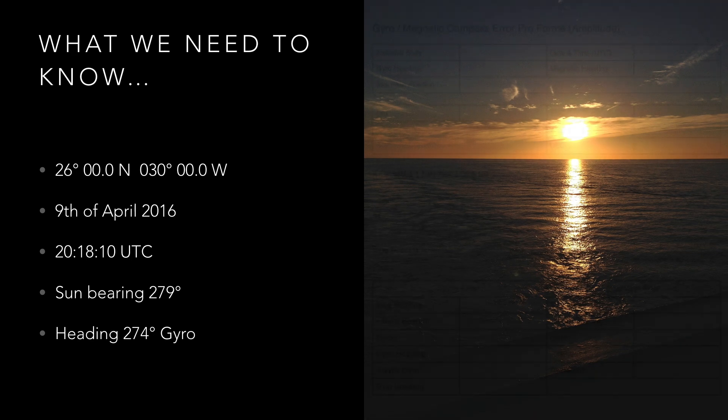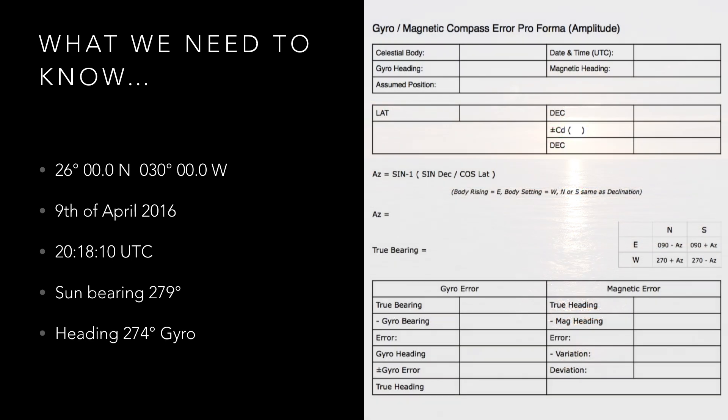To make things easy I have prepared a brief pro forma which is in a similar format to my azimuth pro forma and can be downloaded from my website — the link is in the description below. We will now fill in our known information in the appropriate boxes on the pro forma.